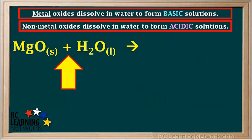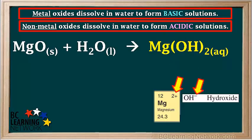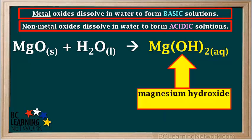Similarly, the metal oxide magnesium oxide, MgO, reacts with water to produce Mg(OH)₂. Because the charge on a magnesium ion is 2+ and the charge on a hydroxide ion is 1−, there are two OH groups for every Mg, and the formula is Mg(OH)₂. Mg(OH)₂ is called magnesium hydroxide, which is also a base.